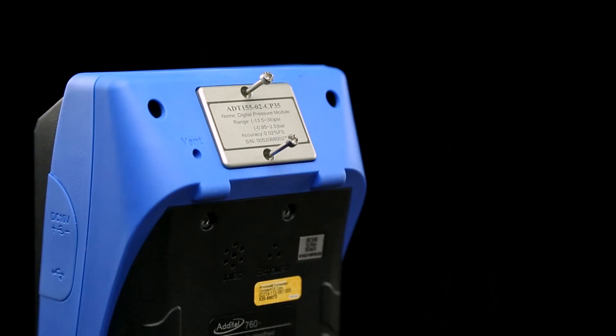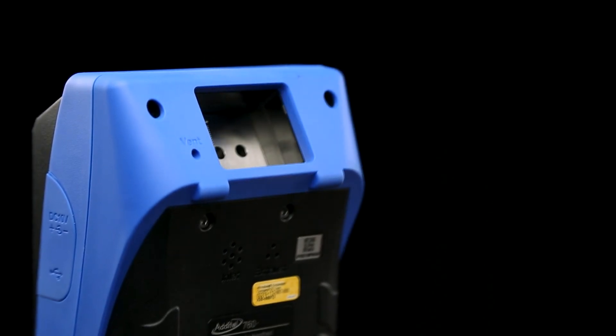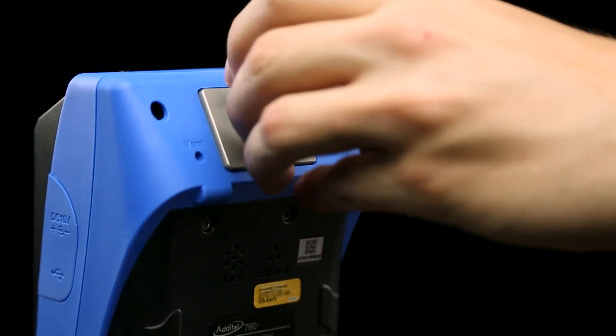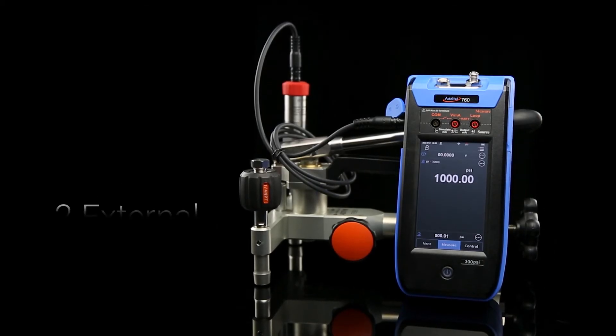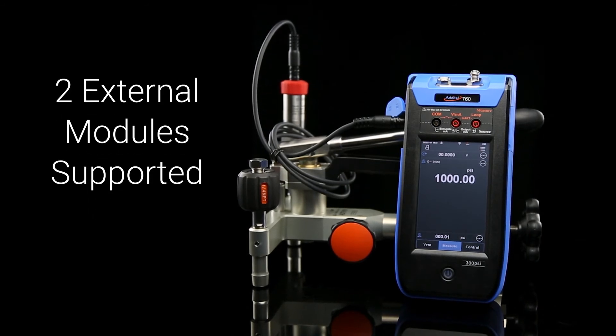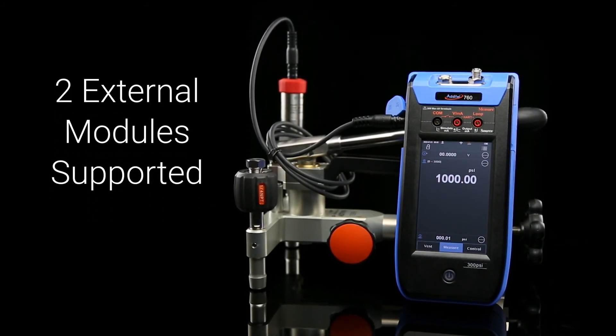The field switchable pressure modules enable you to change your internal reference pressure to match any device in your system. If you need to work with higher pressures, the 760 can be connected to external pressure modules for readings up to 60,000 psi.